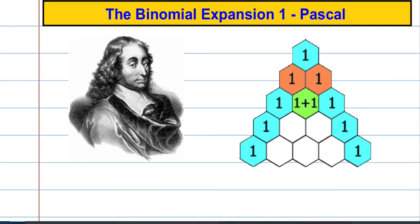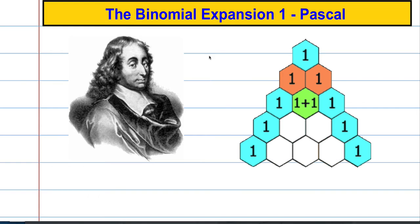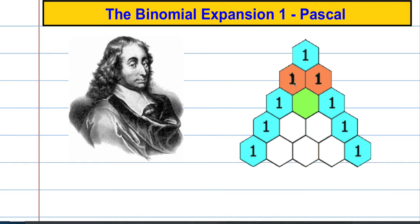So the first video here is about this man called Pascal. He was a French mathematician and one of the things he's most well known for is this pyramid here, known as Pascal's Triangle. What he did was he started with a one at the top and put two ones underneath. And if you add the two terms together above, you get the term below.